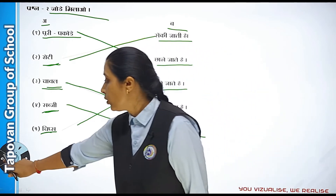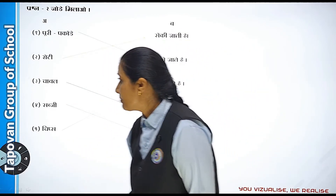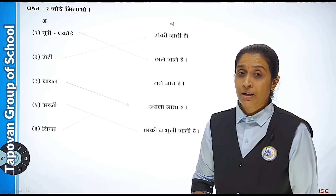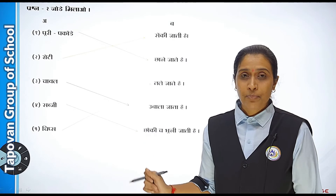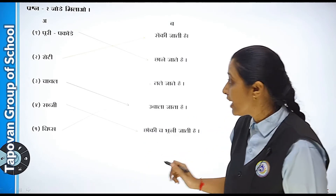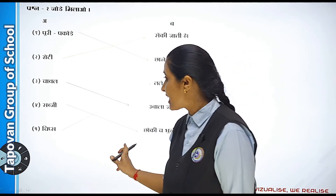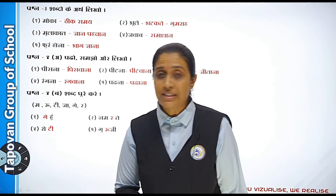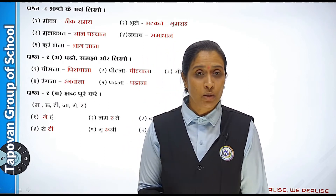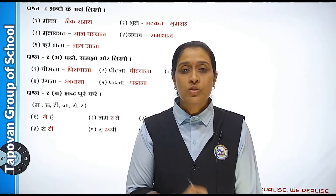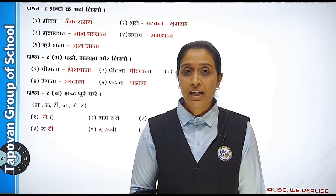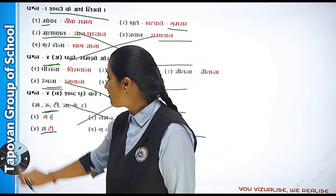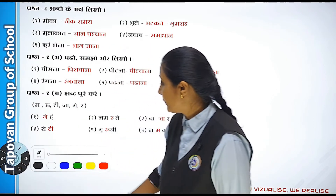Yeh hai hamara doosra question — jode milao. Aapko notebook mein do part banana hai, A aur B, aur dono part mein jo 5-5 hain uske saamne match karna hai. Ek baar phir se dekh lo, aur samajh mein nahi aaye toh mobile mein pick bhi le sakte ho. Yeh hamari exercise hai aur compulsory notebook mein sundar writing mein likhna hai.